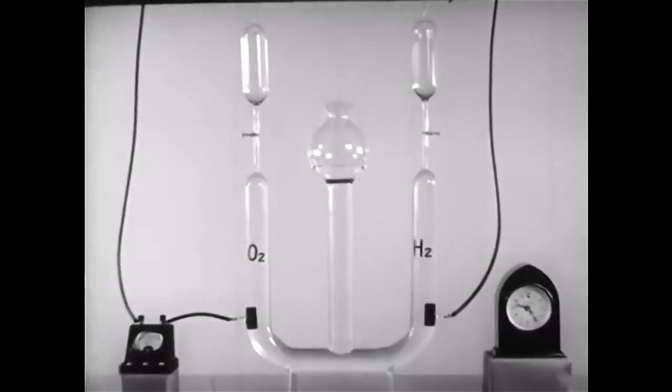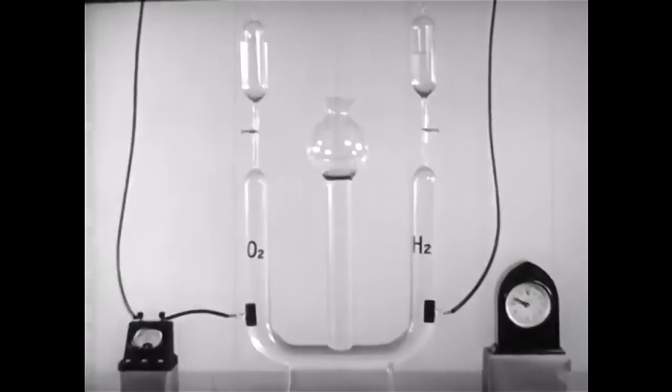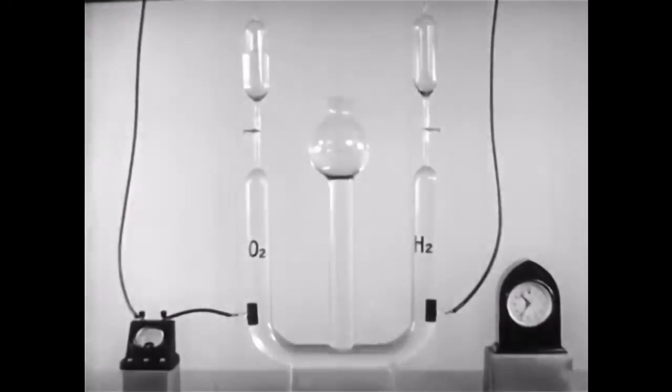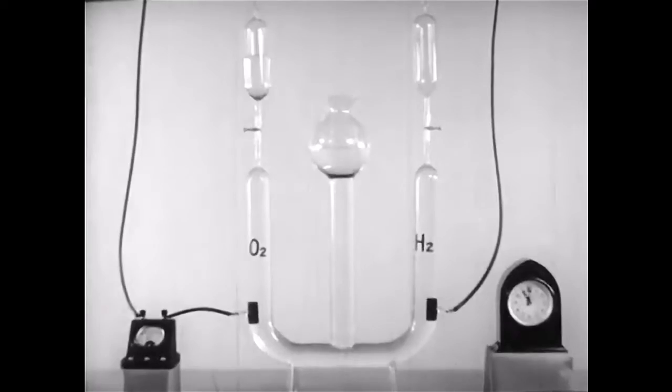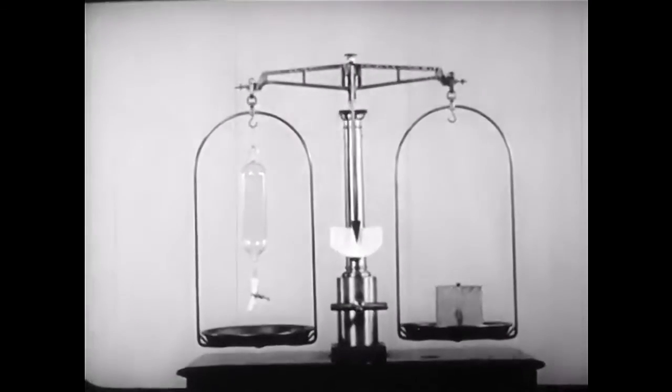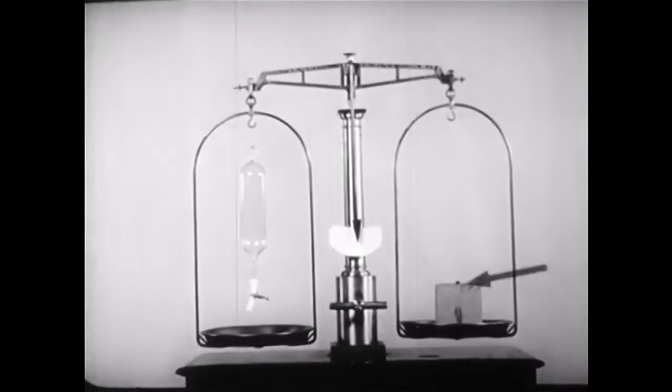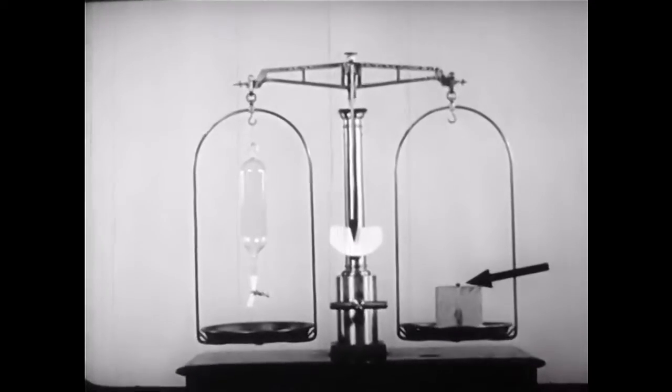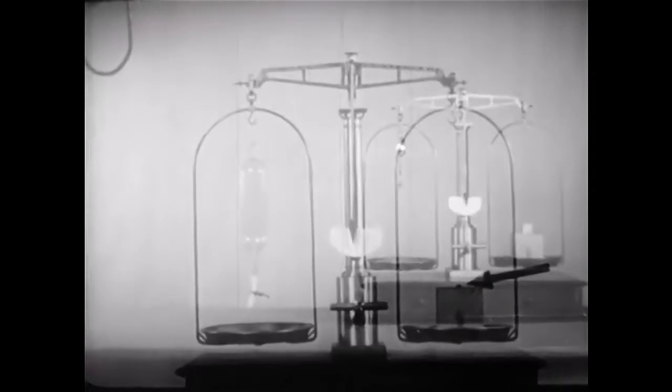Next we use acidified water. The electric current here releases oxygen and hydrogen, accumulating in the vials at the top. Using the same current as before with silver, and for the same length of time, we discover that only one one hundred eighth as much hydrogen by weight is released, as was silver.